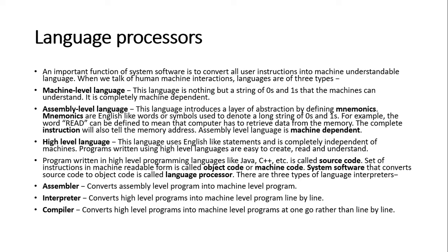When we write programming languages today, most languages we use are high-level languages. Those high-level languages need to be translated from high-level language to machine language. This is done using translators, which come in three forms: compilers, interpreters, and assemblers.